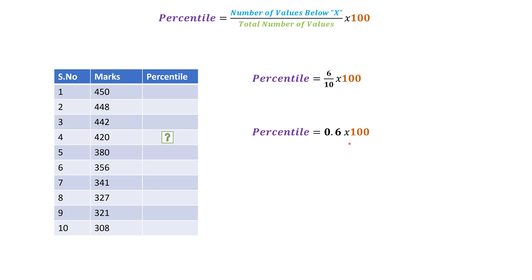Six divided by 10 into 100, it is going to be 0.6 into 100 and the result is 60. So the percentile of this particular candidate is 60. Now let us try to see or apply the second formula.